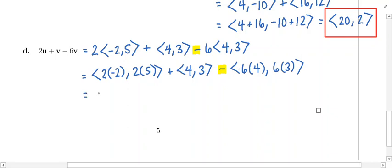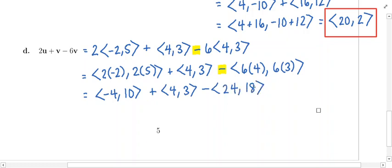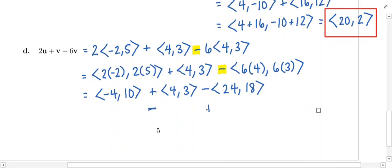Simplifying: the first vector is negative 4, 10. We're leaving the middle vector alone, and then we're subtracting the last vector which has components 24, 18. Now we are just adding and subtracting vectors. Addition and subtraction are done together from left to right, so we're going to do the addition first, and then we will do the subtraction. If the subtraction had come first, you would do that first — you do whatever comes first from left to right.